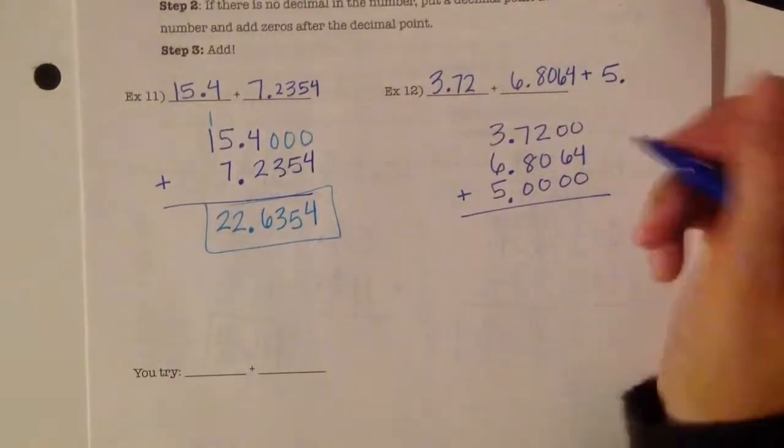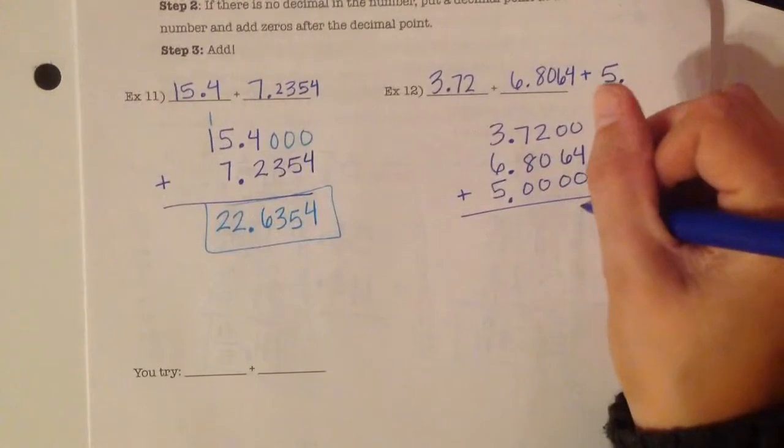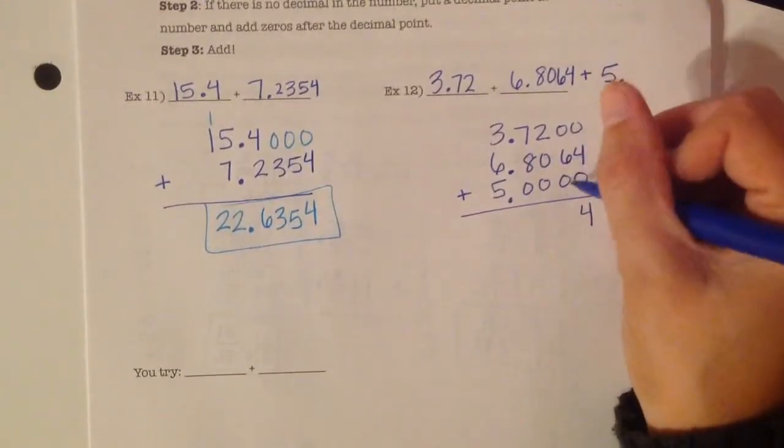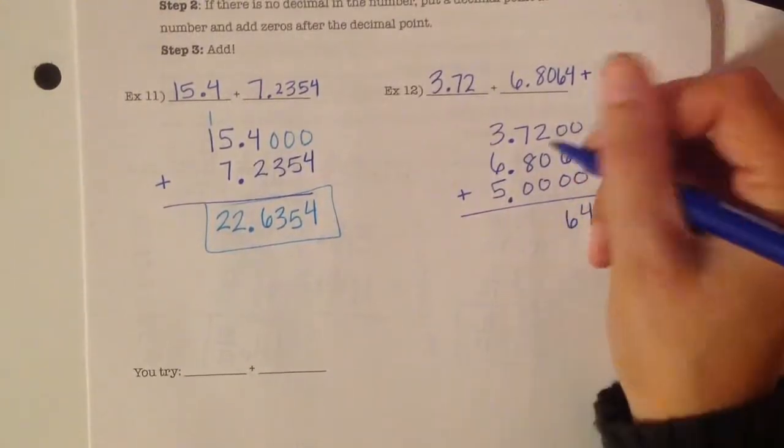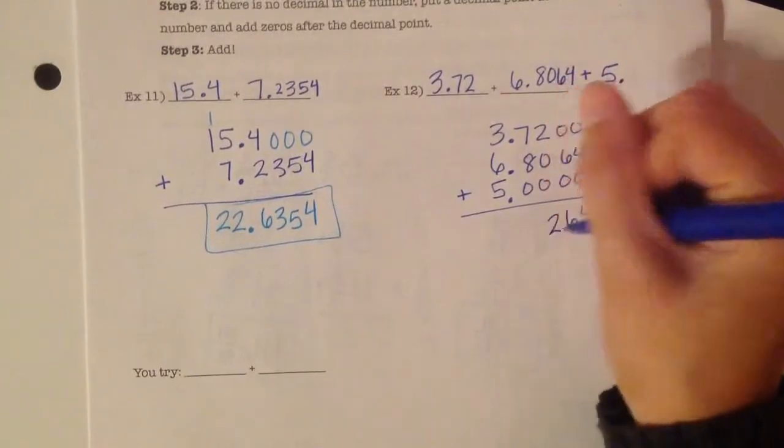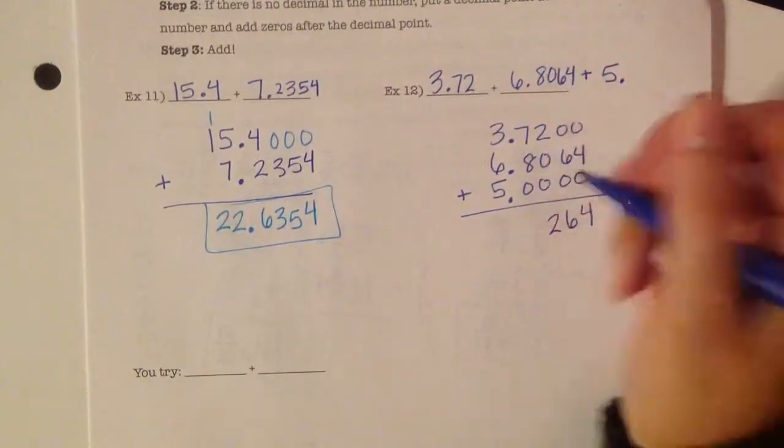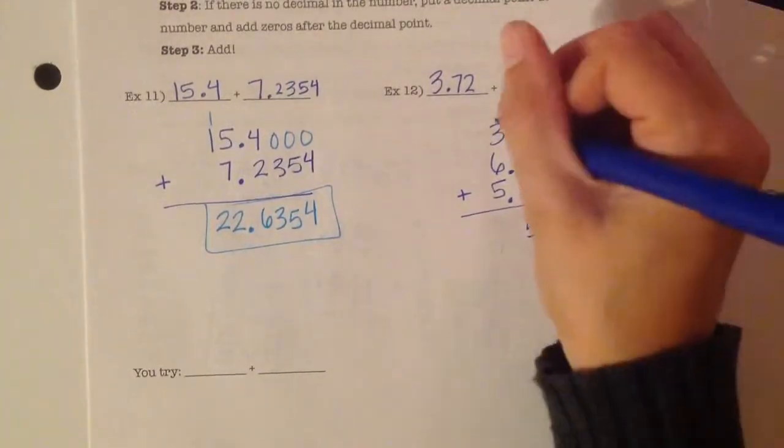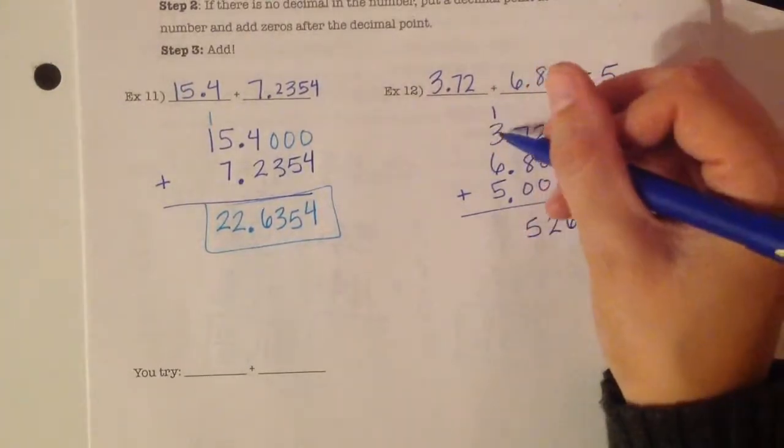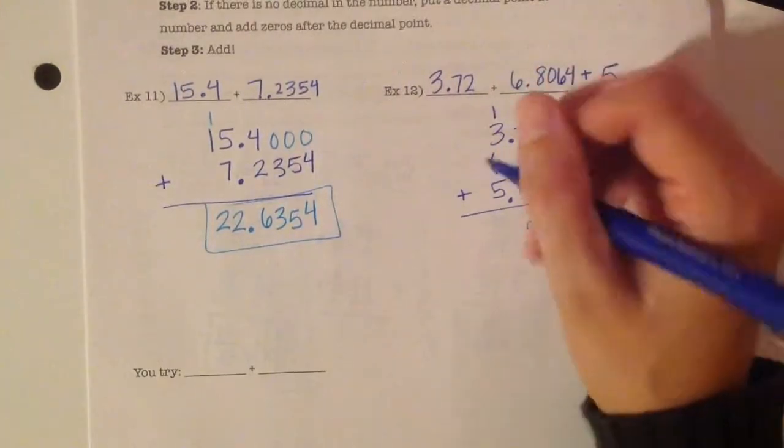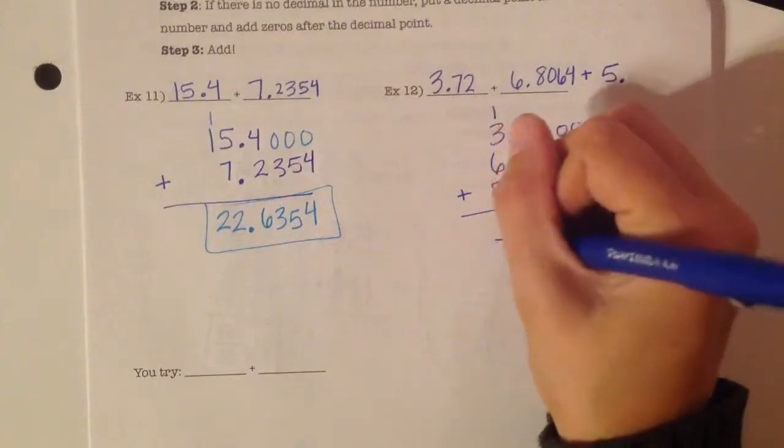And now I add 0 plus 4 plus 0 is 4. 0 plus 6 plus 0 is 6. 2 plus 0 plus 0 is 2. 7 plus 8 plus 0 is 15. Carry the 1. 1 plus 3 is 4. Plus 6 is 10. Plus 5 is 15.